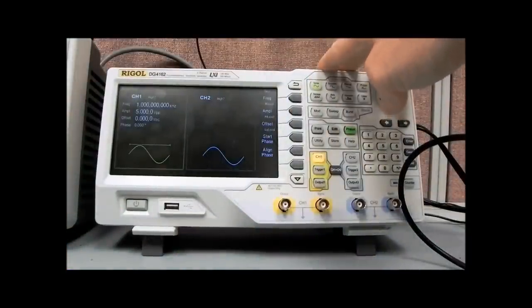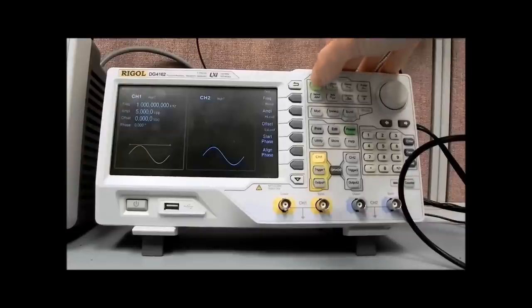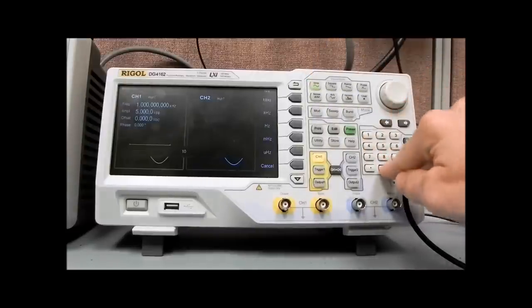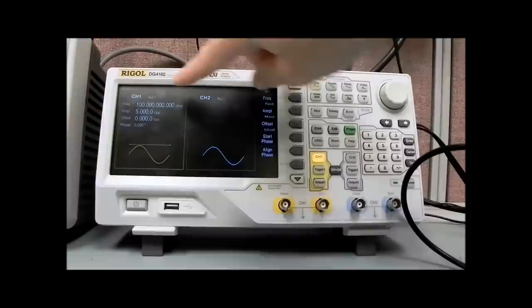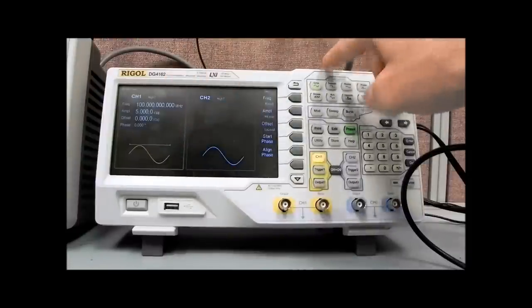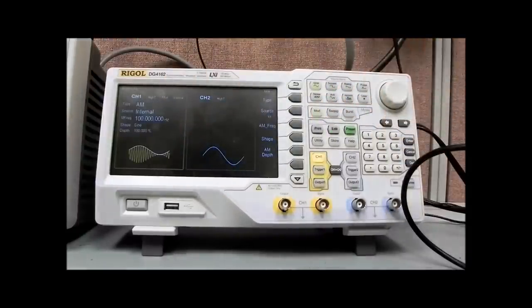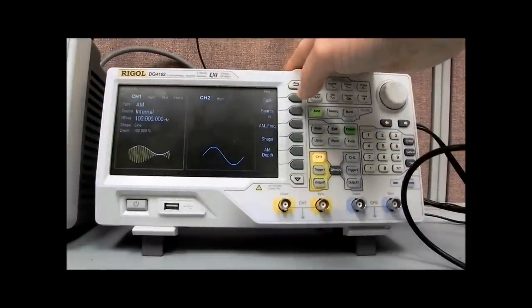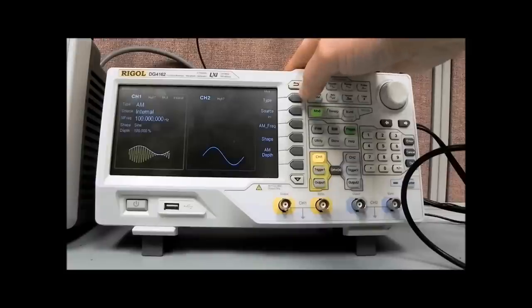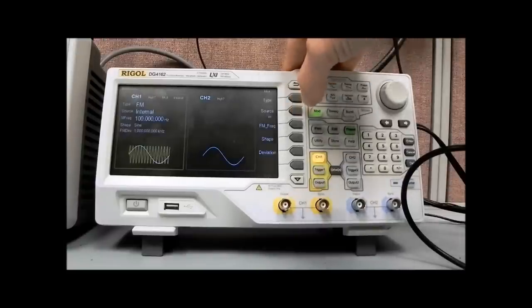We're going to do an FM modulation, so the carrier is going to be a sine wave. And let's make it 100 megahertz. So that's going to enable modulation. And with the DG4000 series, we have a number of modulation styles that we can work with. I'm going to select type, FM modulation.